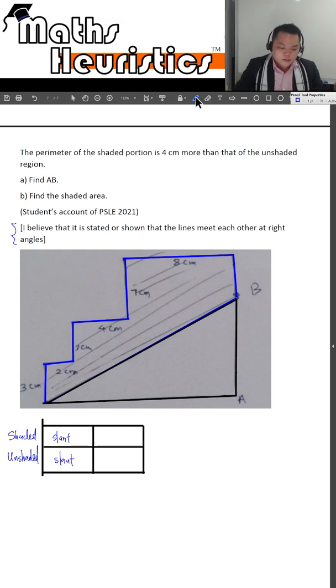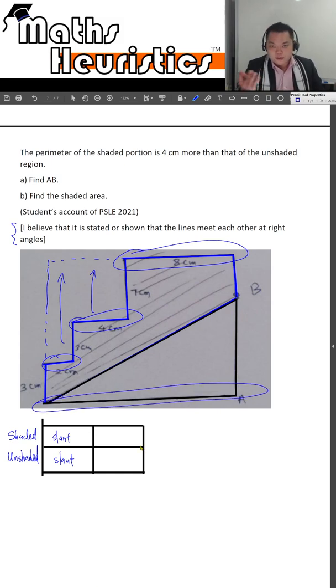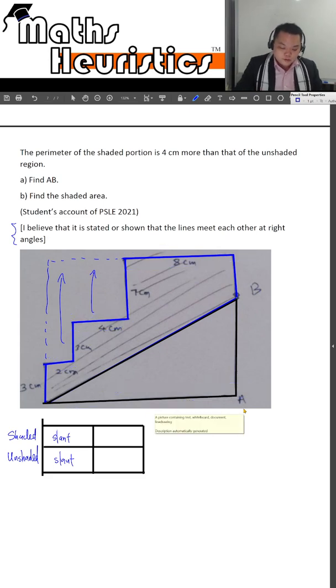Now what about this horizontal length? If you are to push out these two lengths over here, you will be able to see that these three blue horizontal lengths add up to the same length as that of the horizontal length of the unshaded triangle. So the horizontal lengths have been accounted for.